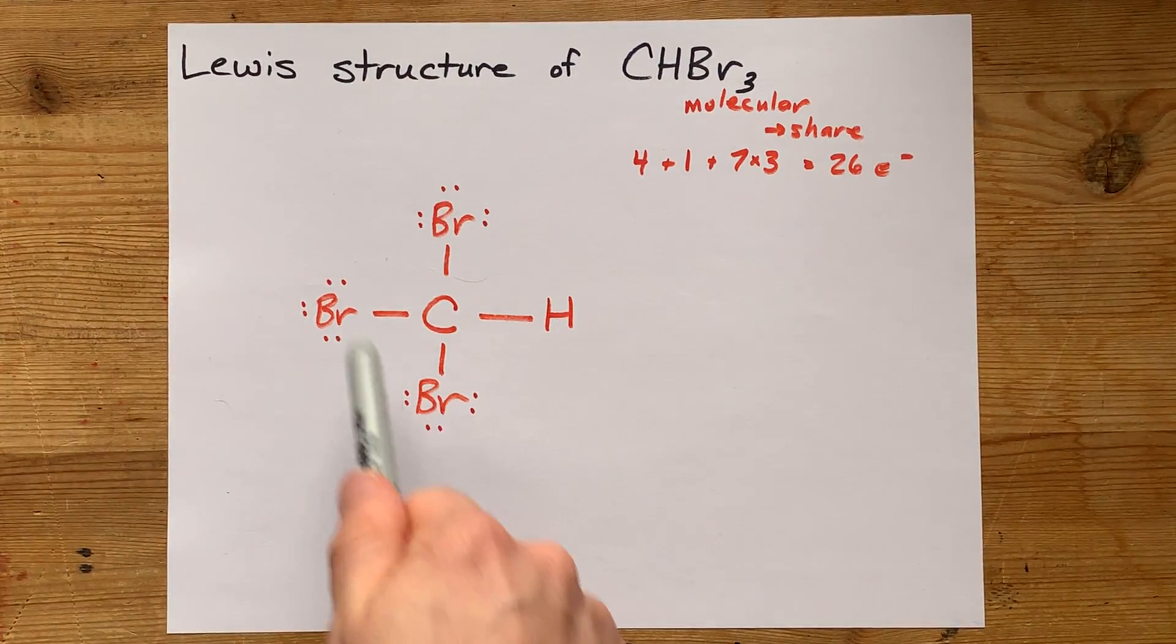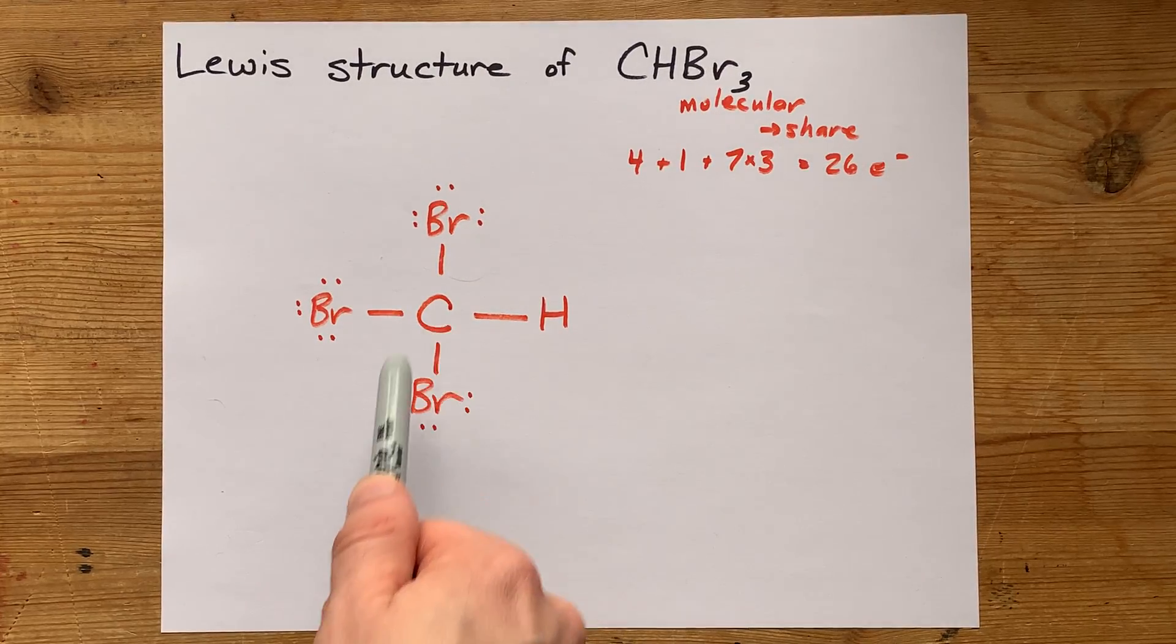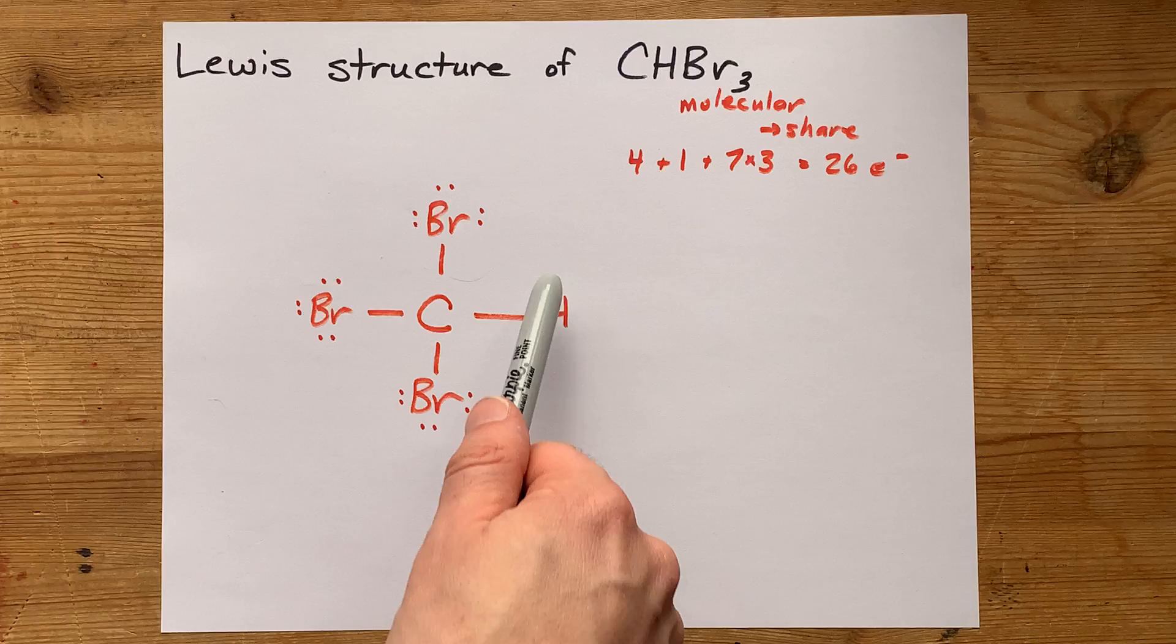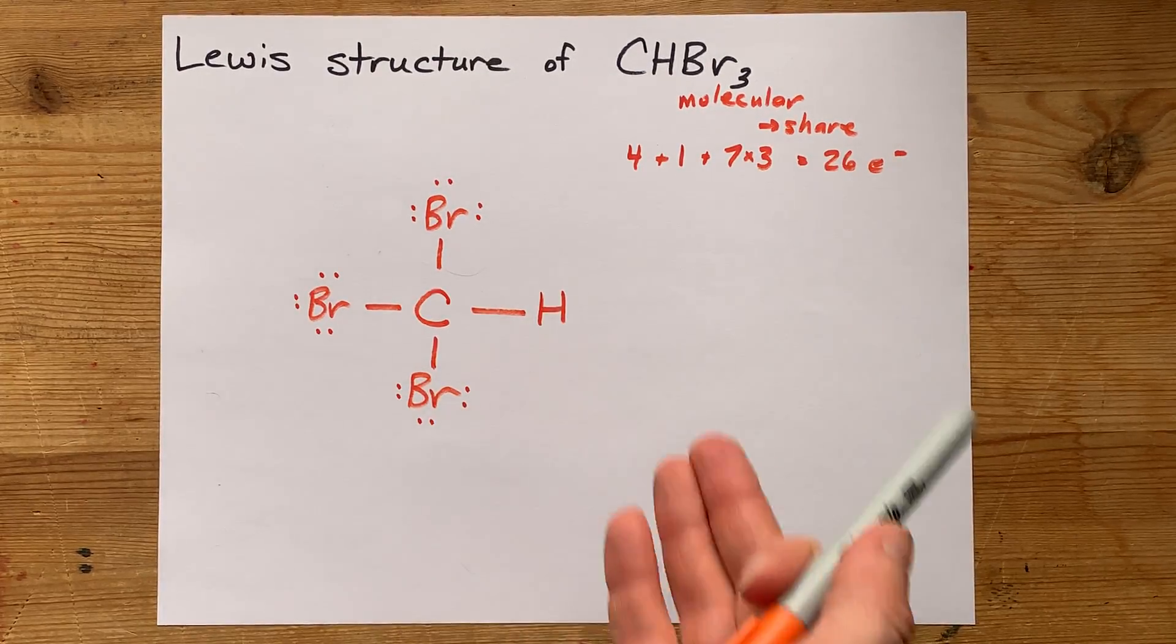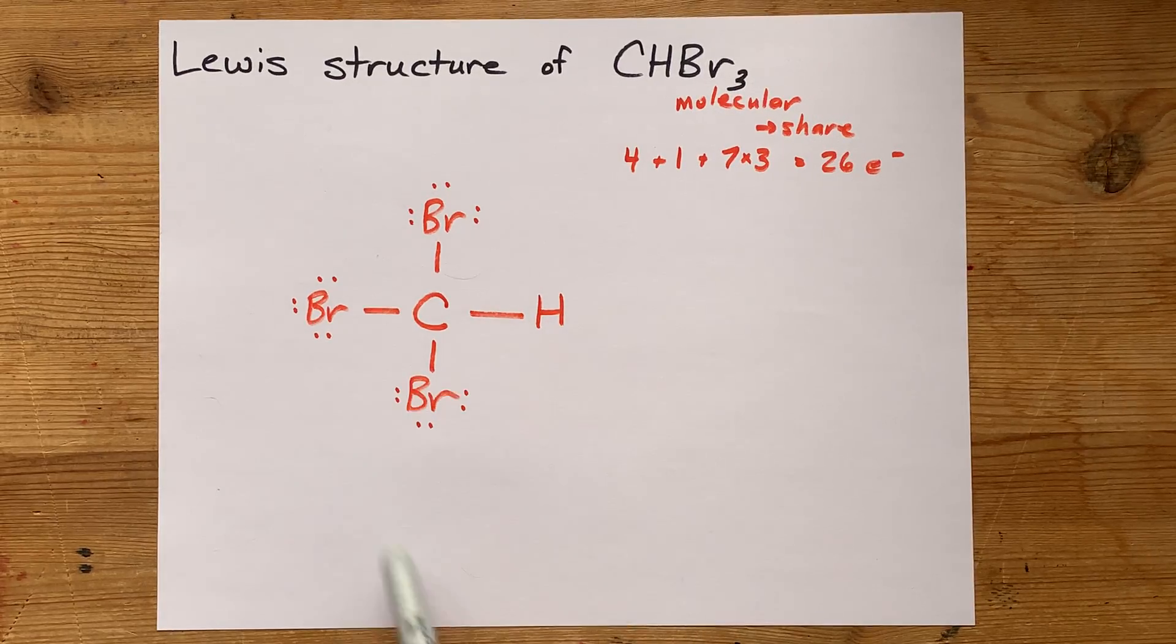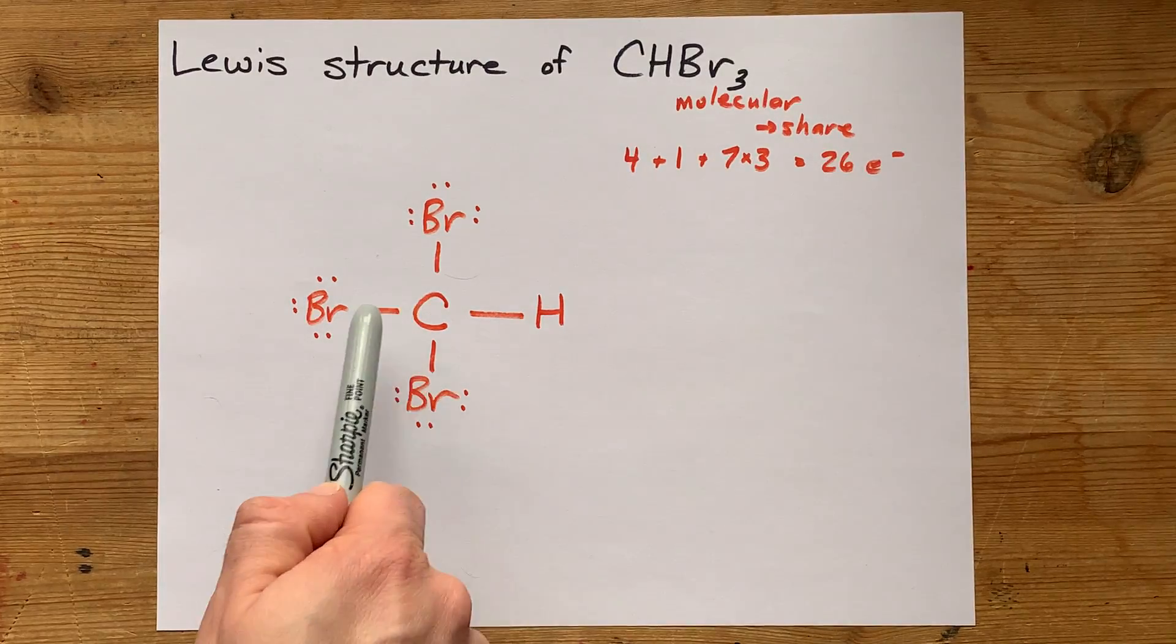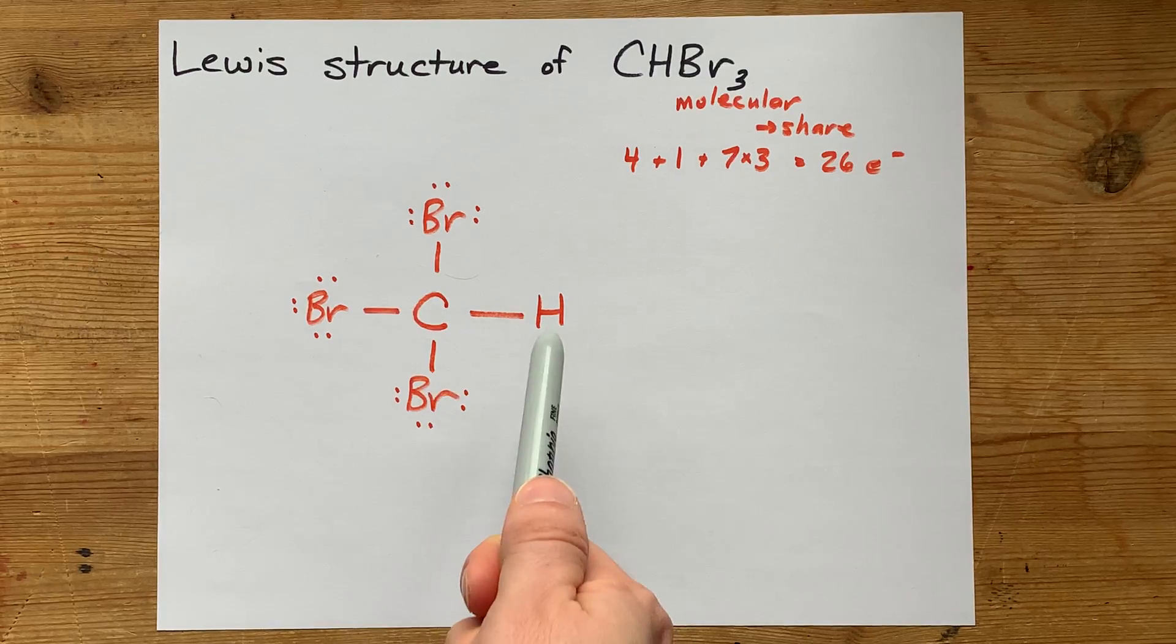My bromines now have a full octet. This carbon also has a full octet of eight electrons around it. Hydrogen doesn't need a full octet - in fact, I've never seen it with an octet. It follows the doublet rule; it's happy with just two electrons in its valence shell. So I've used up all 26 electrons and satisfied the octet rule for all atoms that follow it.